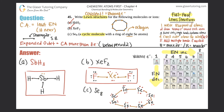Since all eight selenium atoms are identical, you only need to check one for the octet. One selenium has two, four, six, eight electrons — it satisfies the octet. All other seleniums will have eight as well, confirming this is the correct drawing. Box that answer off — that's part C complete. Those were fun Lewis structures to draw; rings are especially enjoyable.